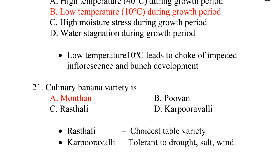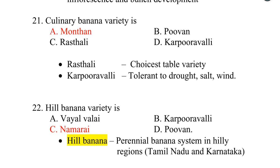Question 21. The culinary banana variety is Bondhan. Rastali is the choicest table variety. Karpuravalli is tolerant to drought, salt, and wind. Question 22. The hill banana variety is Nammarai. Hill banana is a perennial banana system followed in the hilly regions of Tamil Nadu and Karnataka.